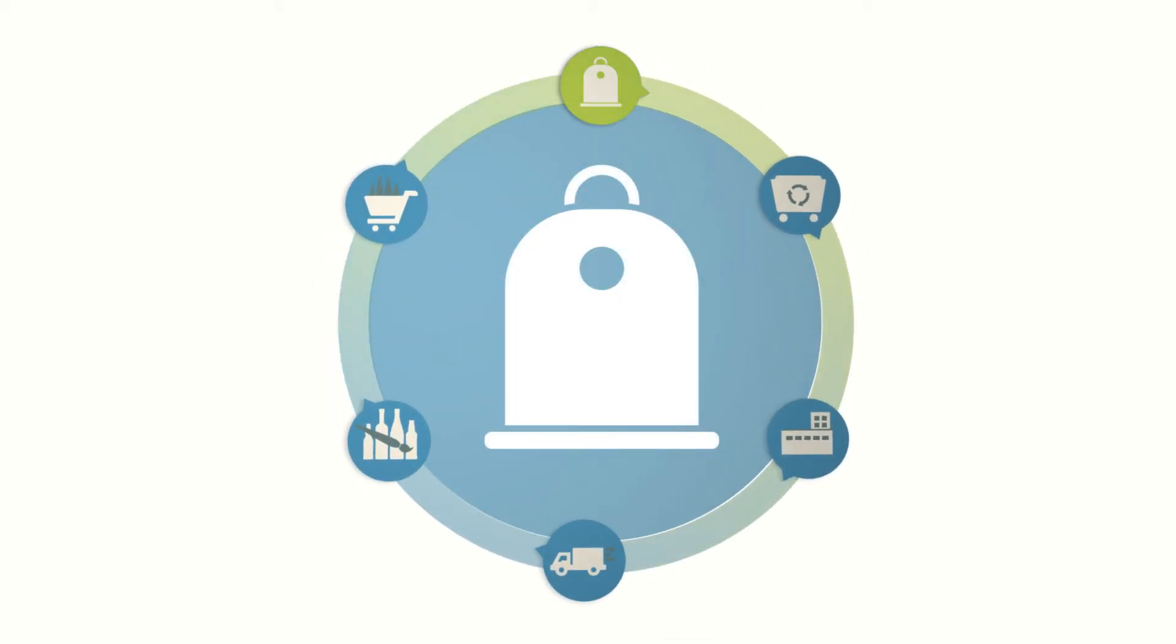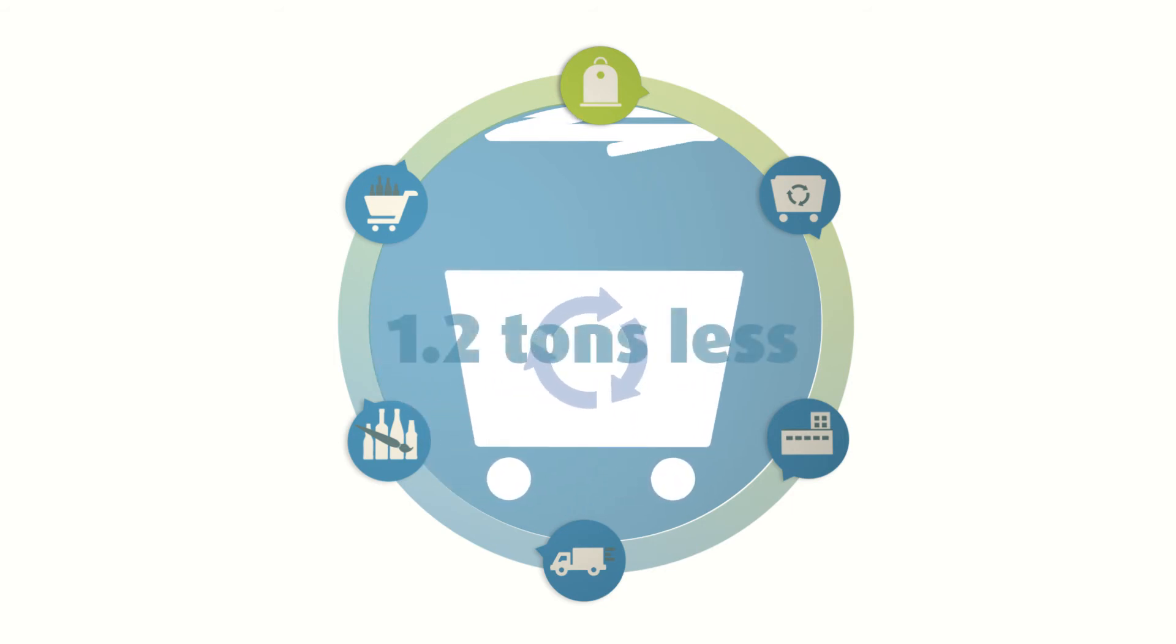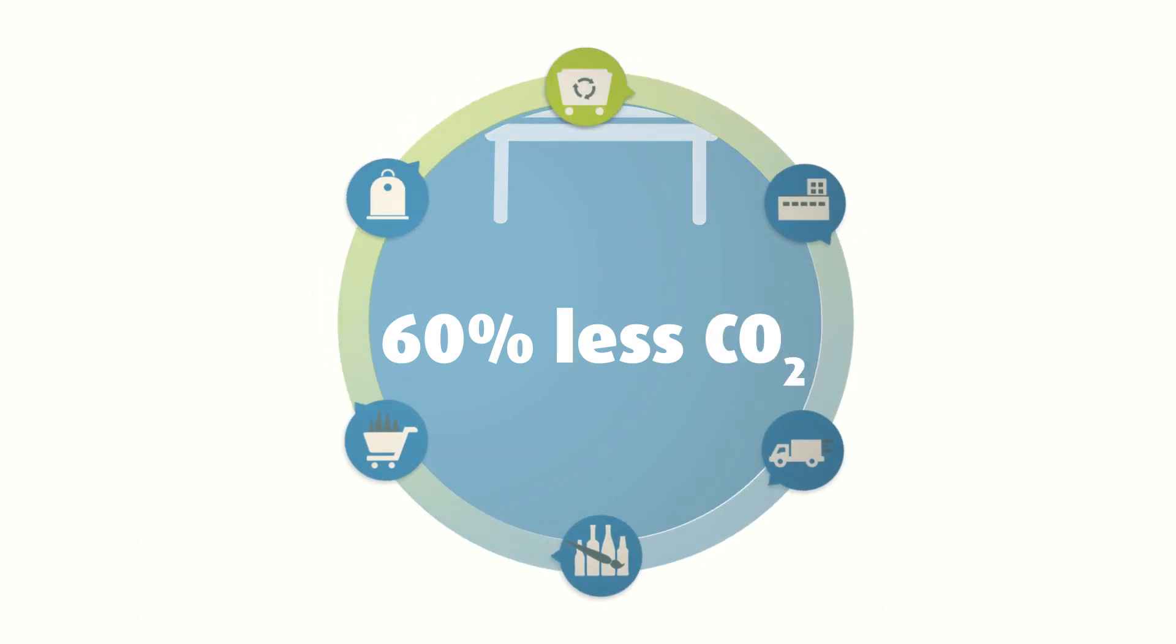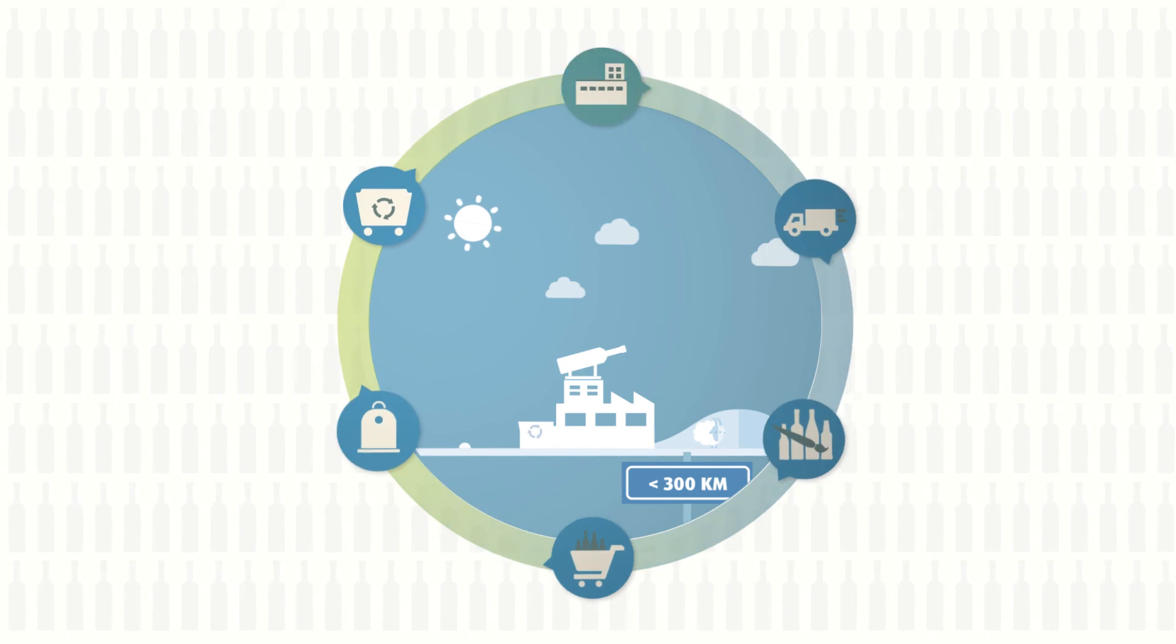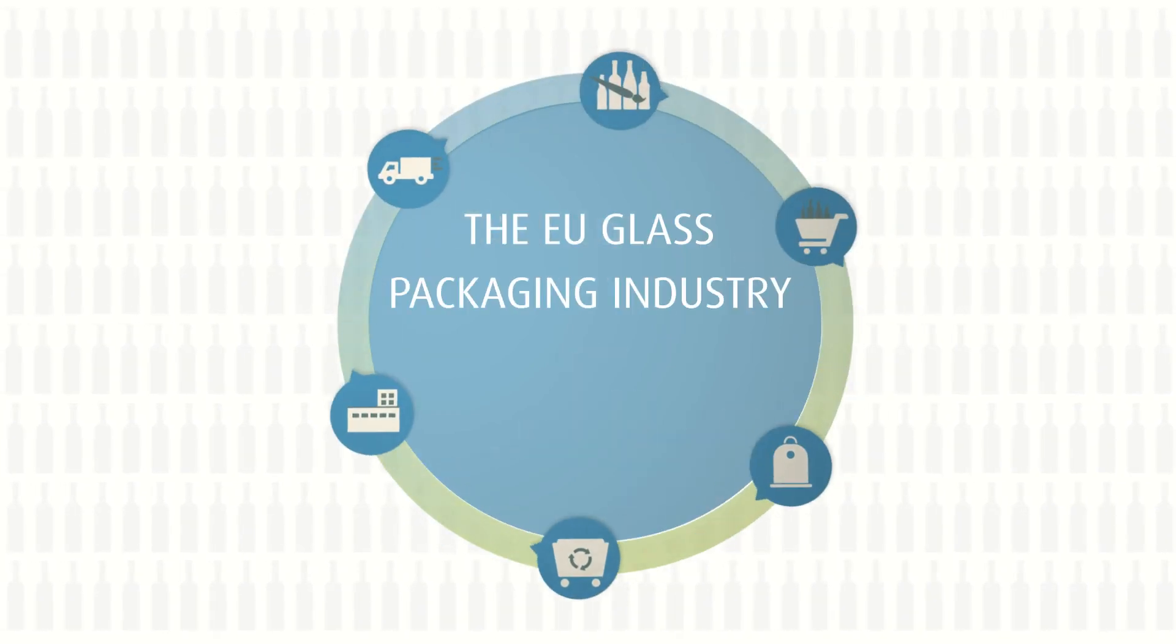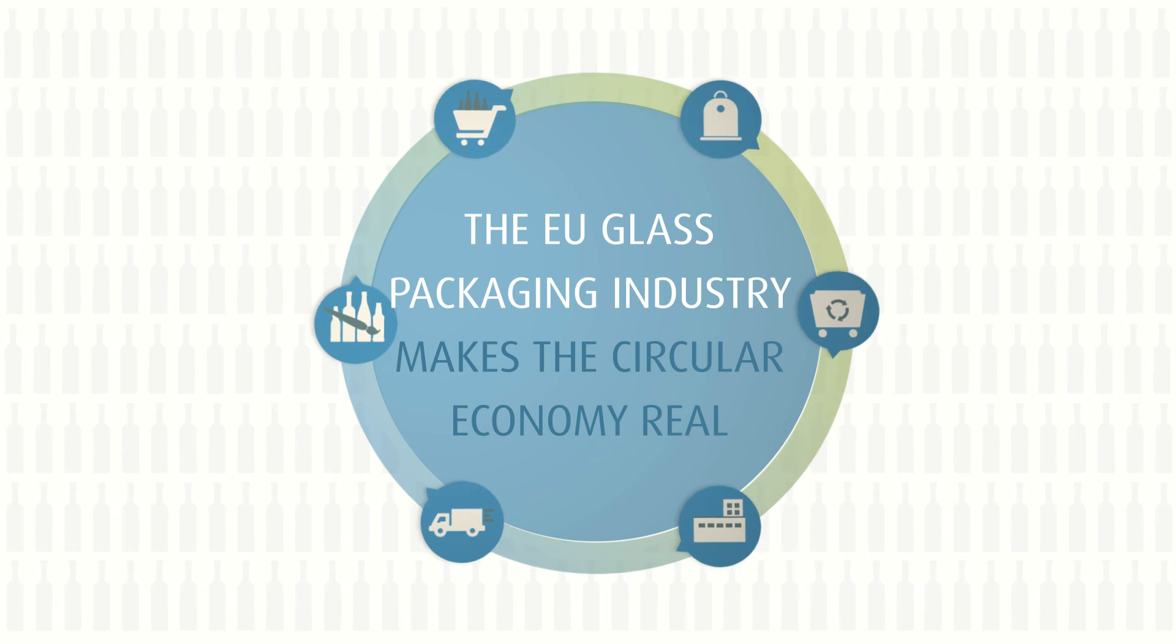Bottle-to-bottle recycling is a real circular economy using a permanent resource. One ton of recycled glass saves 1.2 tons of virgin raw materials and avoids 60% of CO2. More than 70% of raw materials travel less than 300 km. The EU glass packaging industry makes the circular economy real.